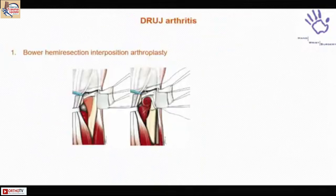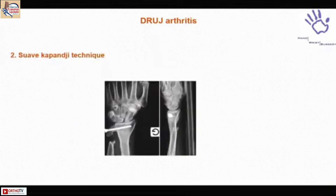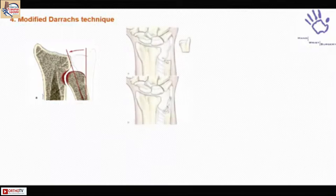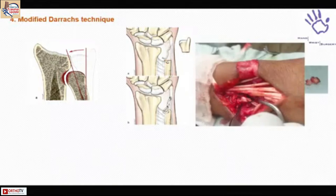If the patient has both arthritis and instability, there is no point in reconstruction. The Sauvé-Kapandji procedure is the procedure of choice in young patients. Darrach's procedure is not routinely done because of the risk of radioulnar impingement; instead, a modified Darrach is used, especially in low-demand elderly patients, where a tether of ECU tendon is added to prevent that impingement from occurring.